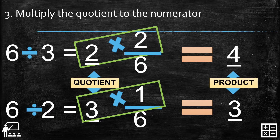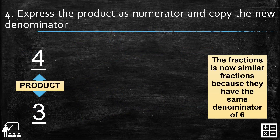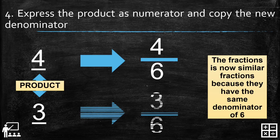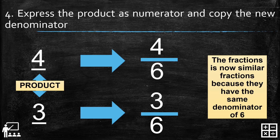Let's proceed to step 4. Our products are 4 and 3, and we write them as numerators with the new denominator. So we get 4 over 6 and 3 over 6. The fractions are now similar fractions because they have the same denominator of 6. Before, they had different denominators, but now they have the same denominator — we have changed them to similar fractions.